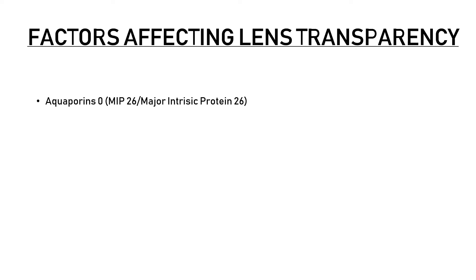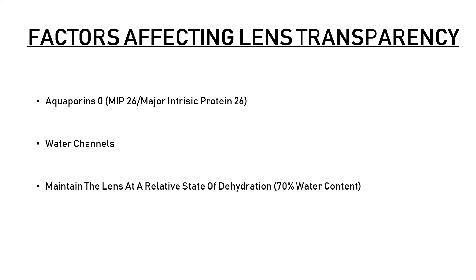Aquaporins also contribute to lens transparency. Aquaporins are proteins that act as water channels. The aquaporin present in the lens is aquaporin 0, also known as MIP26 or major intrinsic protein 26. Increased water content can lead to separation and disorganization of lens fibers, which leads to lens opacification. Aquaporins maintain the lens at a relative state of dehydration at about 70% water content.